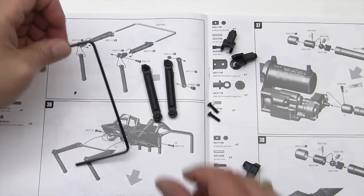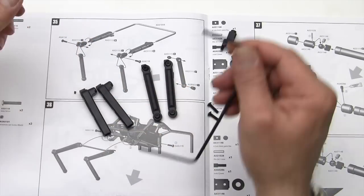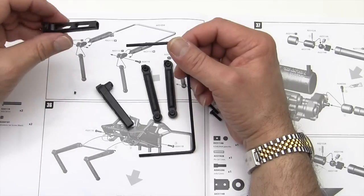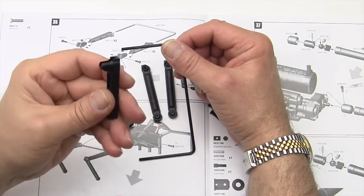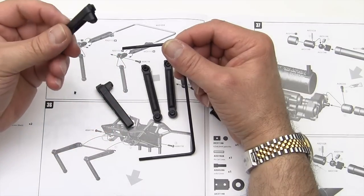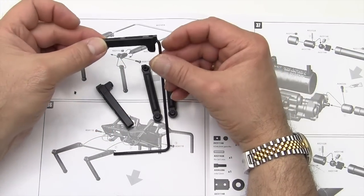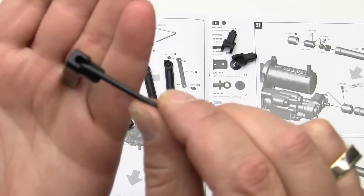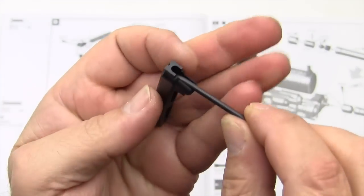Now it looks like we take these two pieces here which are the AX31138s. We look for the portion that has the little cut out in here and the nub, and that nub goes to the inside as we push this through, and then it sets down into the unit there like that.